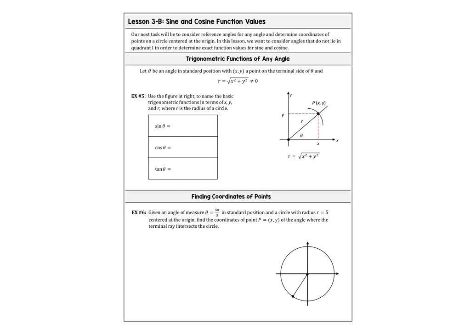Hi guys, this is part B of lesson 3. We just watched the video on part A, where we were finding values of sine and cosine. We did an example where we had to find a radius that was not 1 and figure out sine and cosine from there. We did an example where we were given one of the values — we were given tangent — and we used tangent to find sine and cosine of theta. Then we wrapped up by writing down the sine, cosine, and tangent of some special angles from the right triangle.